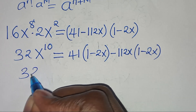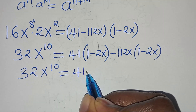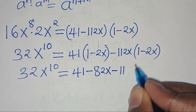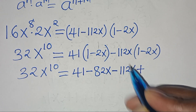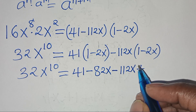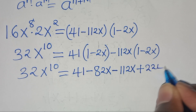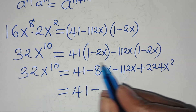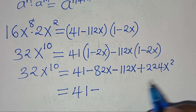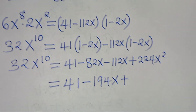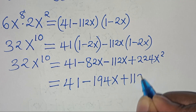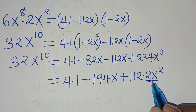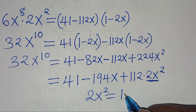Expanding 32x to the power of 10: 41 times 1 is 41, minus 41 times 2x is 82x, then subtract 112x times 1 which is 112x, plus 112x times 2x which is 224x squared. Collecting like terms: 41 minus 82x minus 112x is 41 minus 194x. We can express 224x squared as 112 times 2x squared. Substituting 2x squared equals 1 minus 2x: 112 times (1 minus 2x).